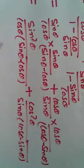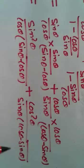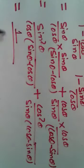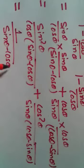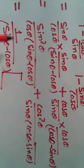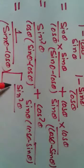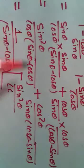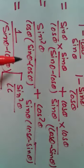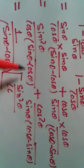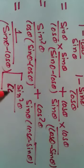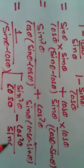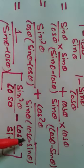We observe sin θ minus cos θ and cos θ minus sin θ. If we take minus common from the second denominator, we can factor out 1/(sin θ minus cos θ). What remains is sin²θ/cos θ minus cos²θ/sin θ, because we took minus common, making it sin θ minus cos θ.